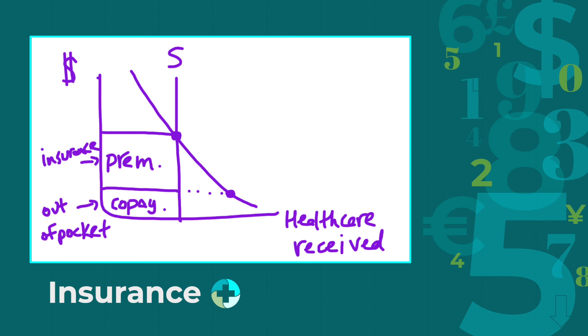What we'll often see is that insurance will pay for a large portion of incurred medical costs, called the premium, and the consumer will pay the rest out of pocket, called the copayment. We can graph this phenomenon as shown, with a typical demand curve and a fixed supply curve, assuming the amount of available healthcare, such as available doctors, is constant.